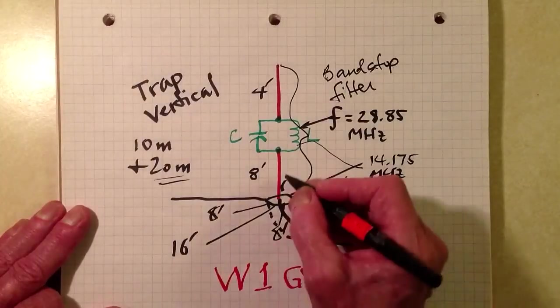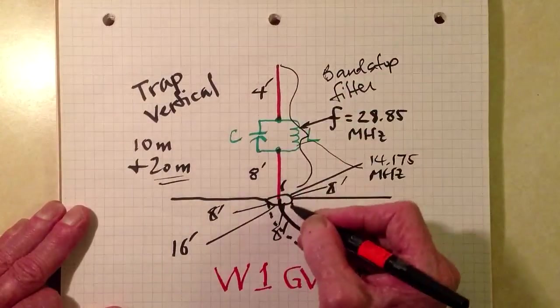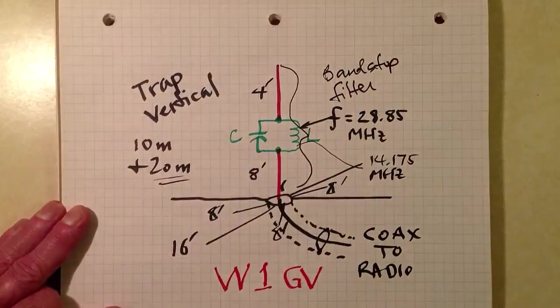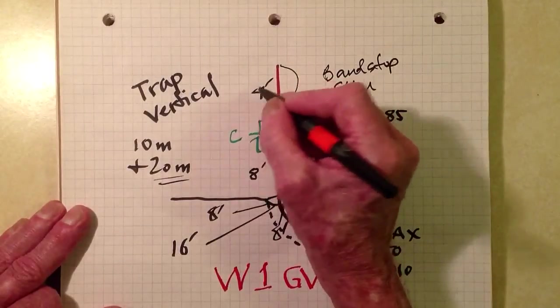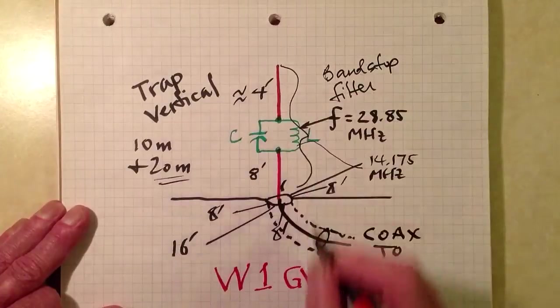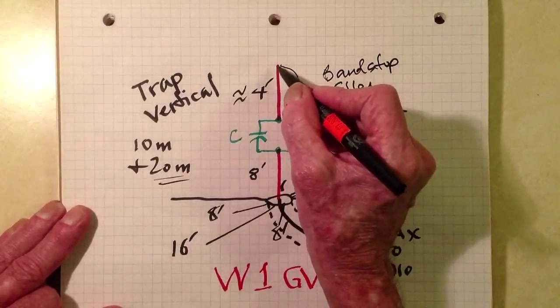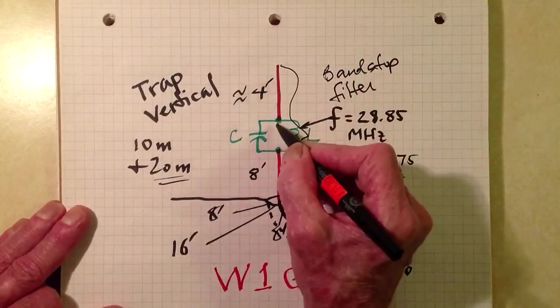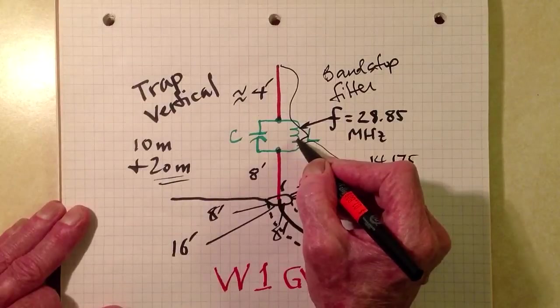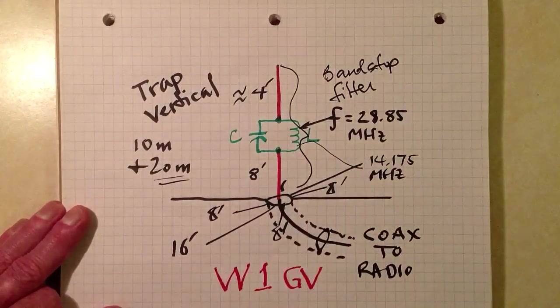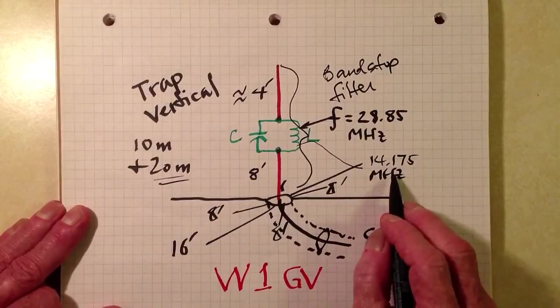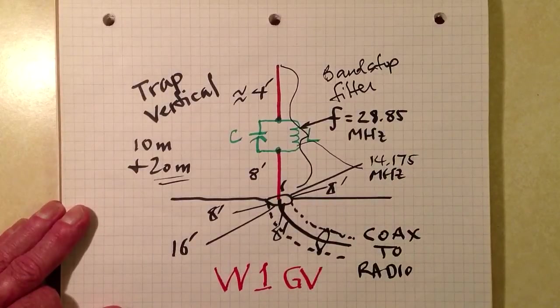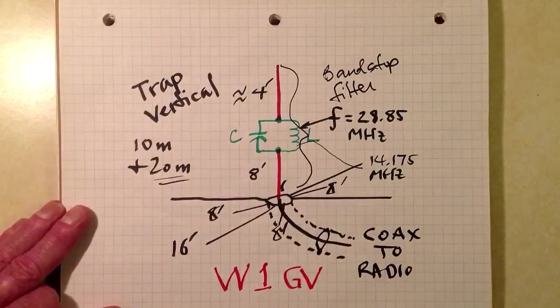But on any other frequency signals can get through this trap, including on 20 meters. Well, when you make this section, this might be four feet, I'm just making a good guess. But you make this section such that the top section, the coil, and the bottom section all together resonate on, say, 14.175 megahertz. Then you have a two band trap vertical.